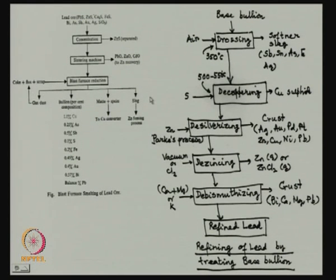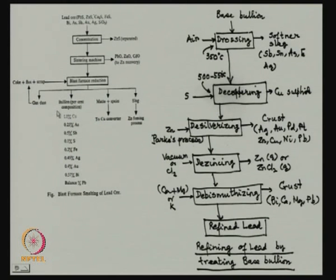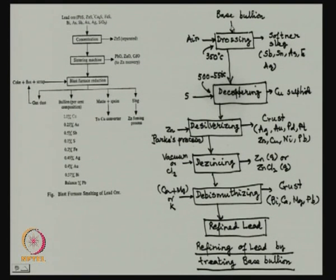We will produce several layers. On top will be a slag — this slag will necessarily contain some zinc and has to be treated for zinc recovery. We will have a matte and speiss, two separate layers or maybe one layer, which has to go to a copper converter. The main output we are aiming at is the base bullion of lead, which will contain a whole lot of impurities and precious metals. This base bullion is treated through some standard chemical treatment steps.